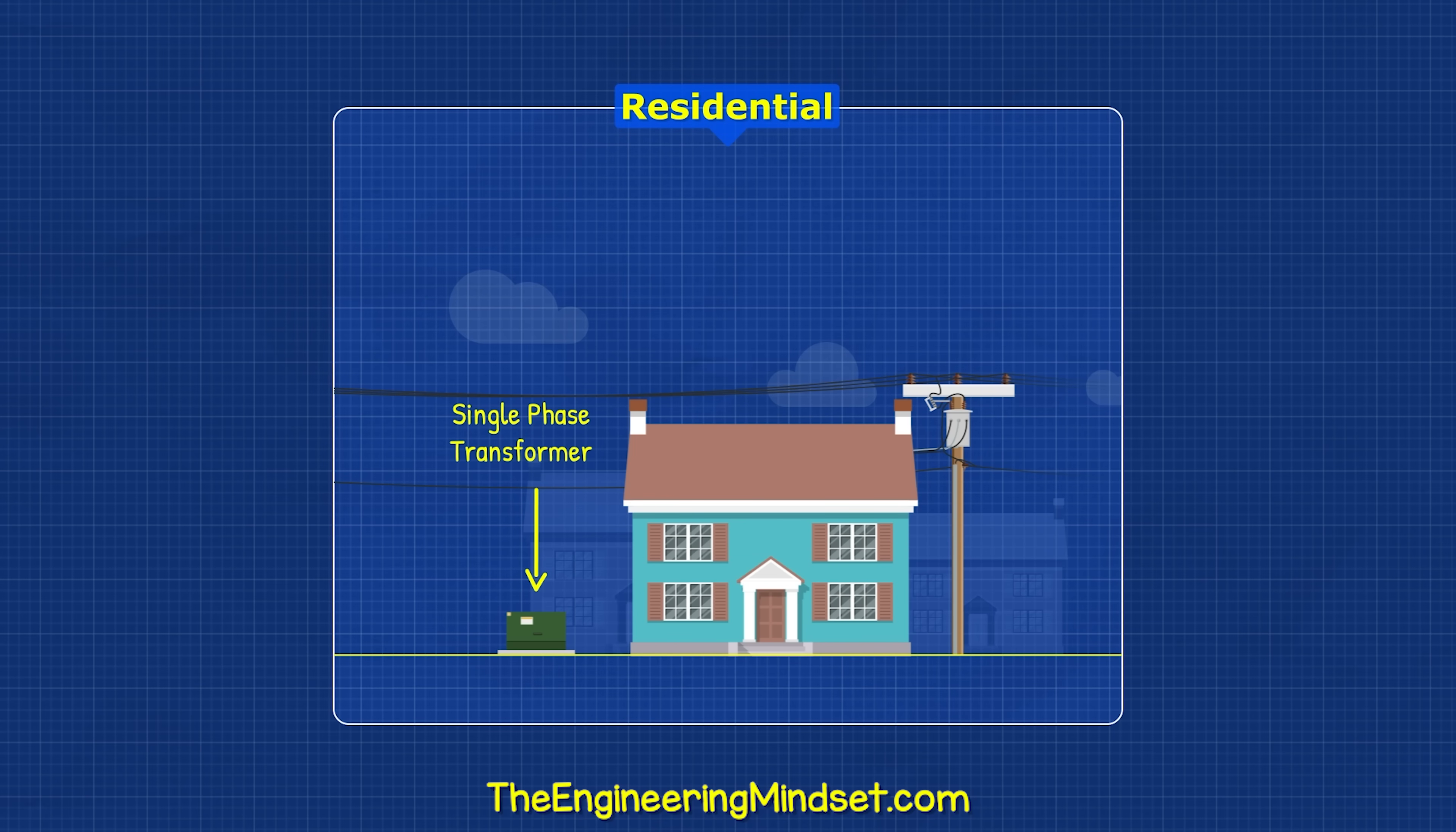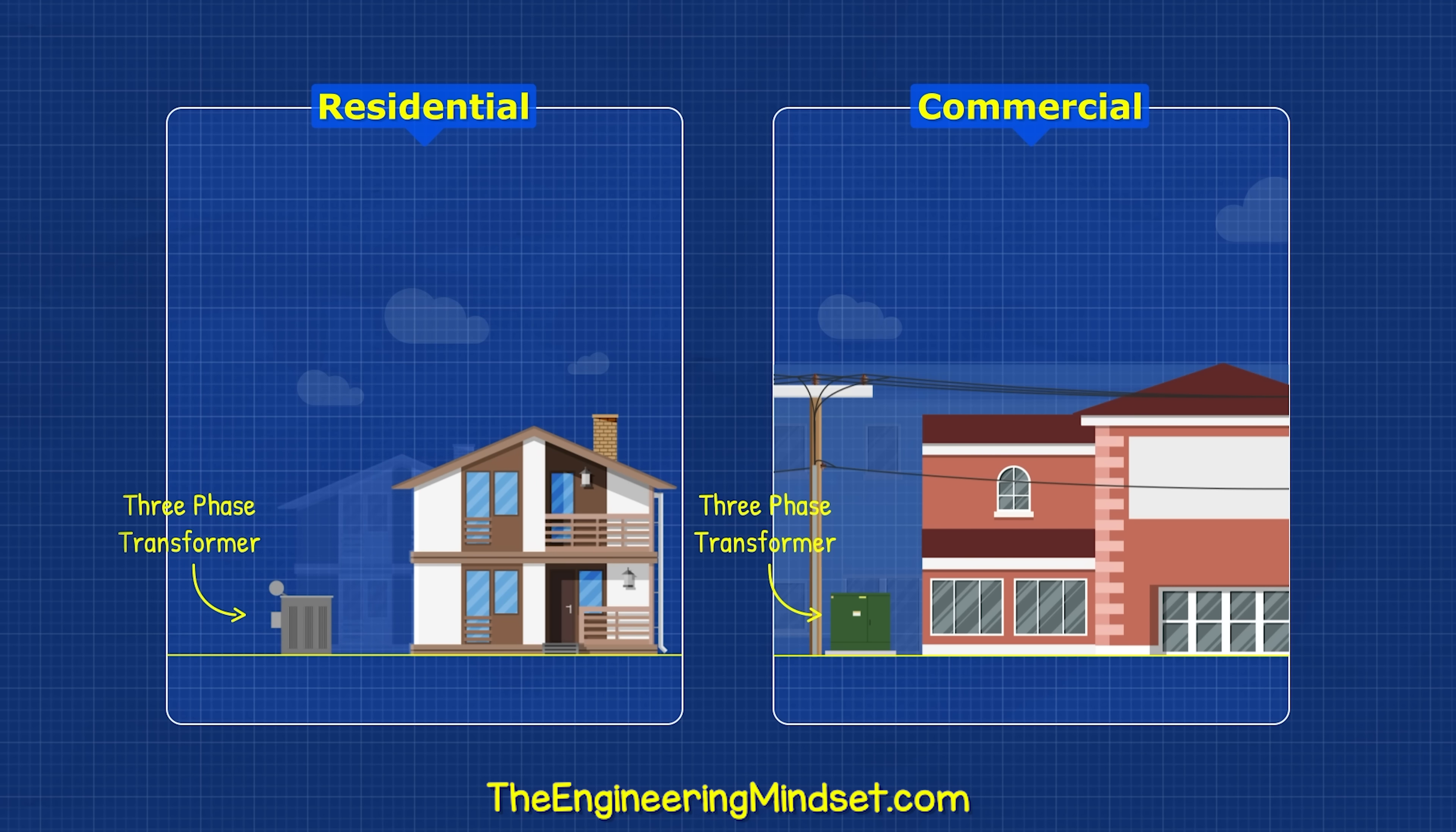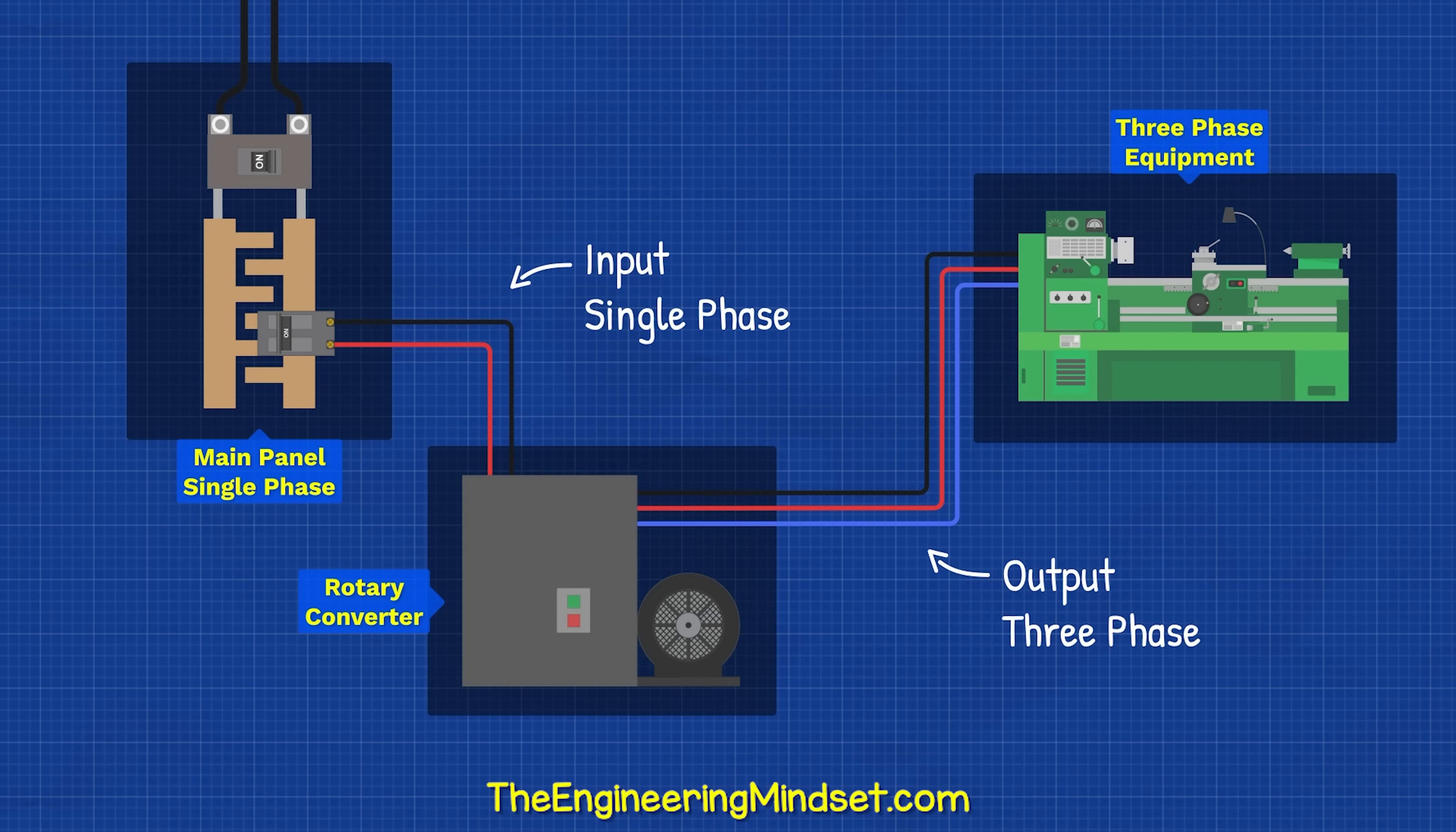Typically, residential properties are provided single phase connections, and commercial properties have three phase connections, although some parts of the world do provide three phases to homes. Homes generally need less power because they have less stuff to power, so a single phase connection is usually fine. We can also convert single phase into three phase using a rotary converter.